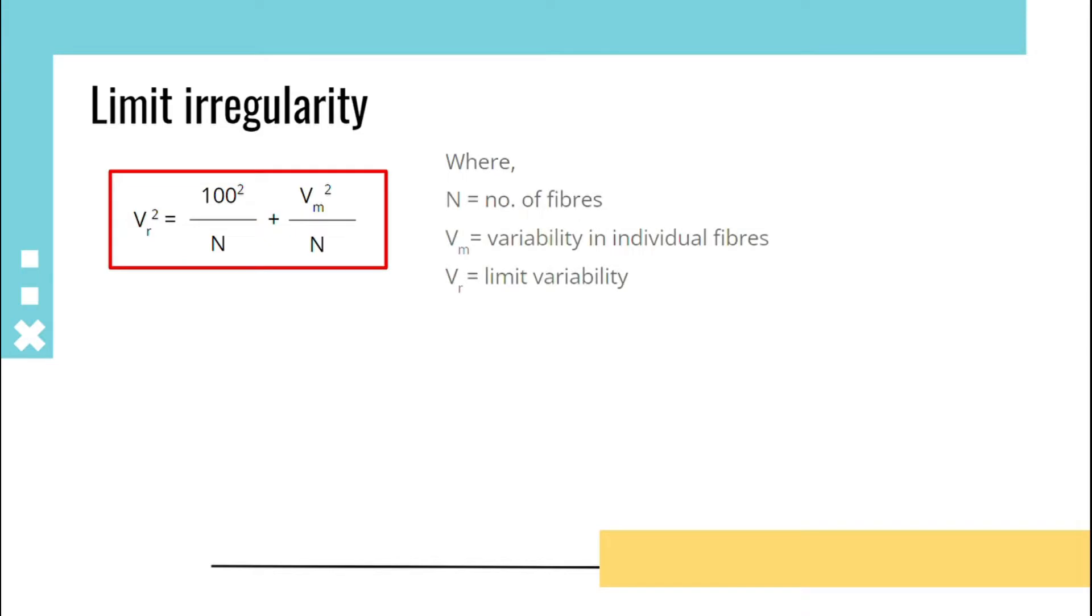Where N is the number of fibers, V_m represents variability in individual fibers, and V_r is the limit variability. For synthetic fibers, there will be no mass variability in the individual fibers, that is V_m = 0, so the formula will be V_r² = 100²/N.